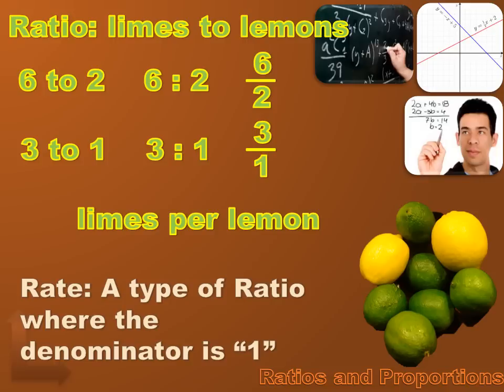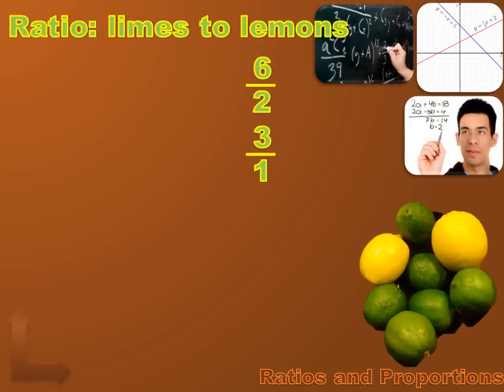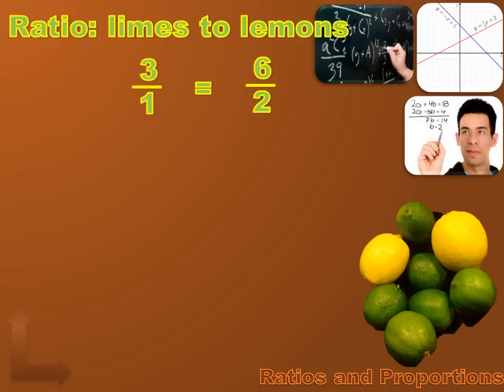If I've got a ratio with a denominator of one, I've also got a rate. Three to one is a rate — three limes per lemon. Miles per gallon is a rate: the number of miles you get with one gallon of gas. Miles per hour is the number of miles you travel in one hour. Calories per serving is the number of calories per one serving. A rate is a ratio with a denominator of one. So my ratio of limes to lemons is six to two, or three to one — both are correct answers.